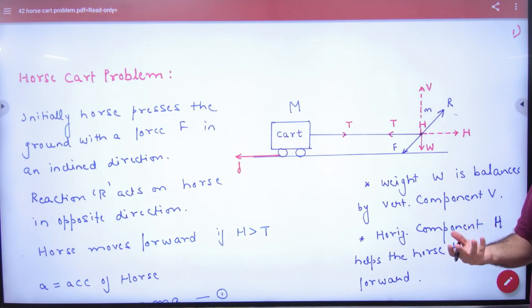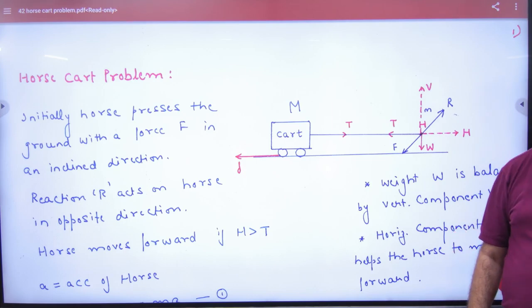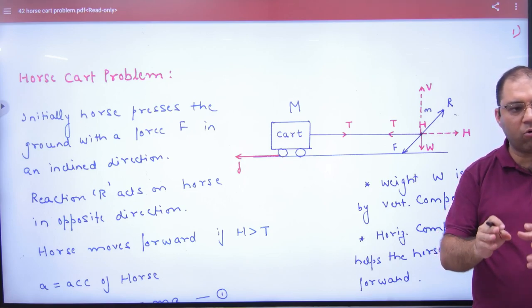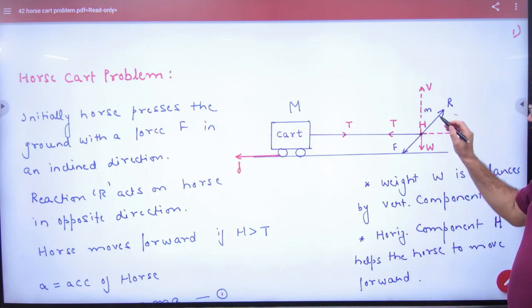We make point objects. We don't take shape here - whether it's a truck, horse, or cow, we just use M for the cart's mass and small m for the horse's mass. Where is the weight? Vertically downwards. The weight acts vertically downwards.